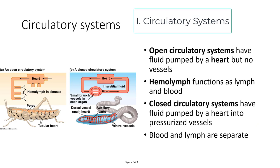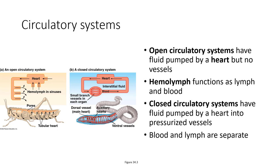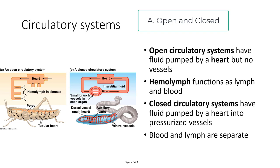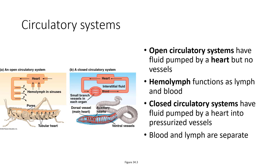When we look at circulatory systems, we classify them as either open or closed circulatory systems. An open circulatory system has fluid pumped by a heart but does not have extensive vessels going to all parts of the body. Instead, they have something called hemolymph, which functions both as lymph — maintaining hydrostatic pressure within the organism — and as blood, bringing nutrients and oxygen around the body. A closed circulatory system has fluid pumped by a heart into pressurized vessels, which allows for more efficient oxygen exchange. In a closed circulatory system, the blood and the lymph are kept separate from one another.